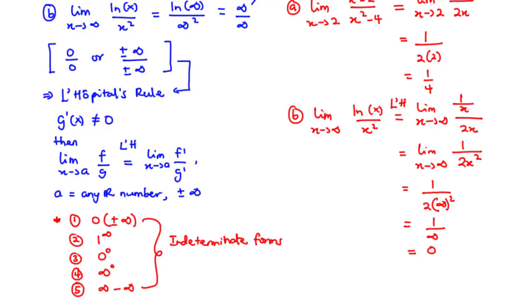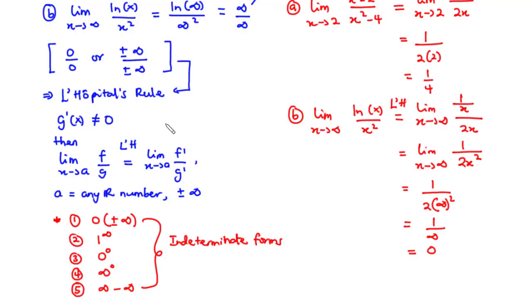In the previous video, we looked at how to evaluate the limit of a function using L'Hôpital's rule. We said that for you to apply L'Hôpital's rule, direct substitution into the function should give you either 0 over 0, or plus or minus infinity over plus or minus infinity. We also looked at the various indeterminate forms you may encounter. Now in today's video, we are going to focus on the product of functions such that direct substitution produces an indeterminate product.